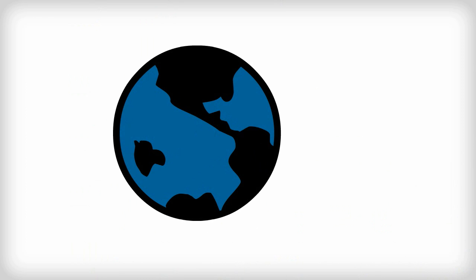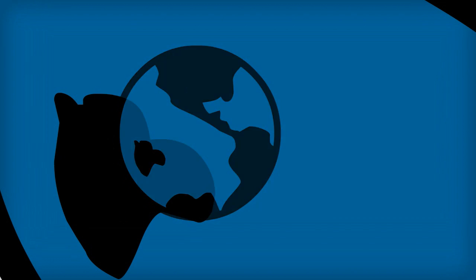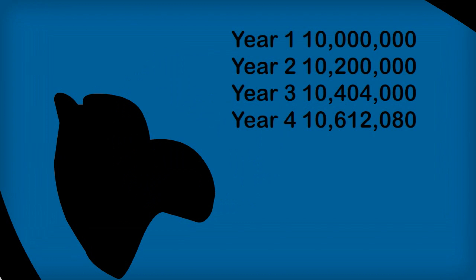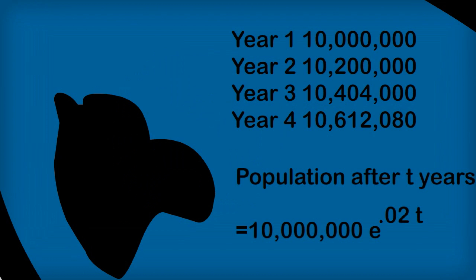Suppose a country's population starts at 10 million and increases by 2% per annum. The formula for the population after 10 years involves E again.